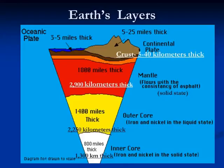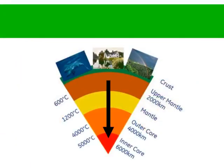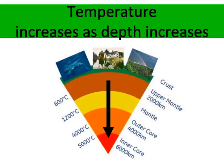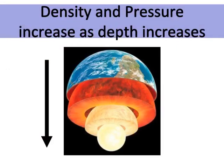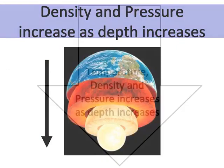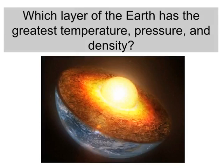Here is an illustration. What do these two images tell us about the layers of the Earth? Temperature increases as depth increases. Density and pressure also increase as depth increases. So temperature, density, and pressure all increase as depth increases. The layer of the Earth with the greatest temperature, pressure, and density is the core.